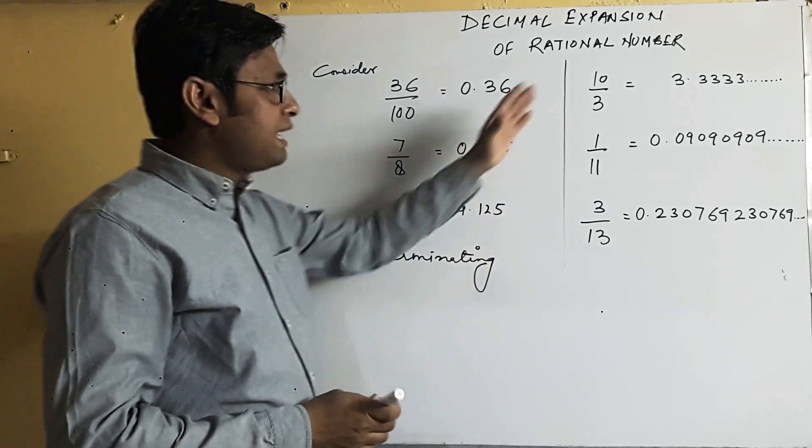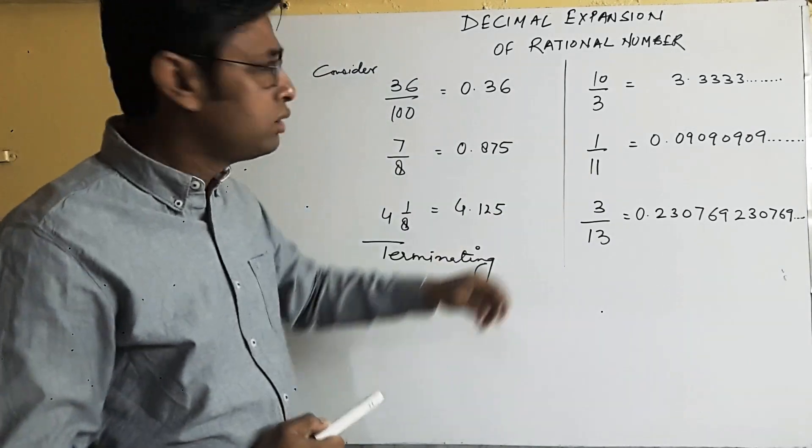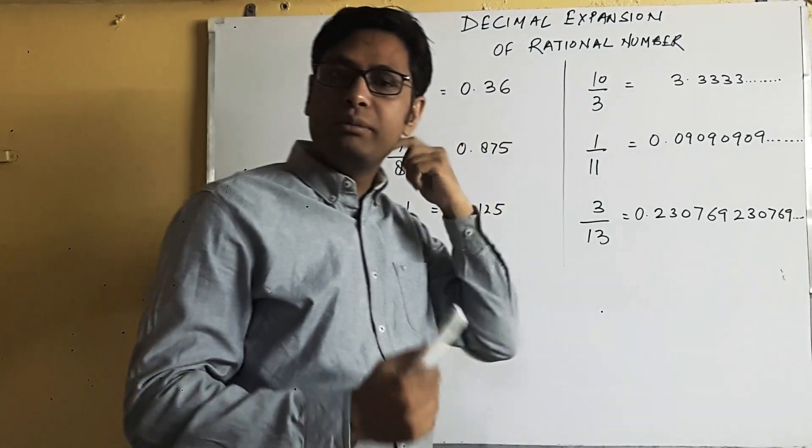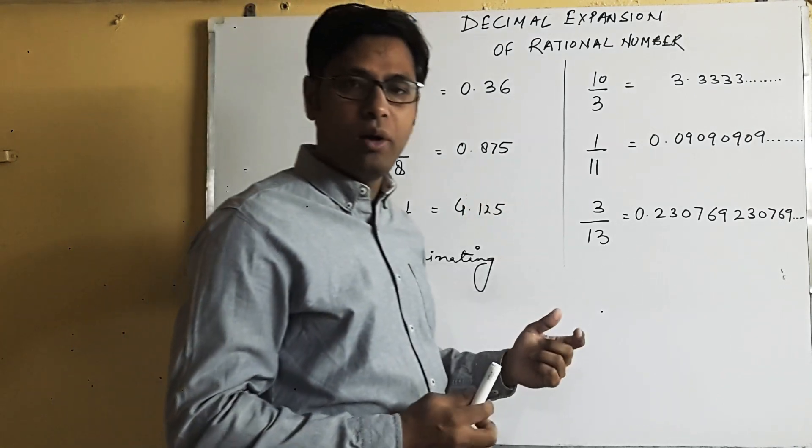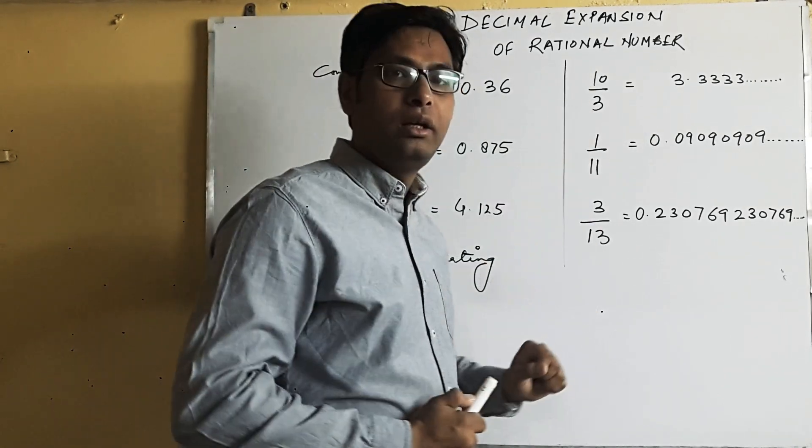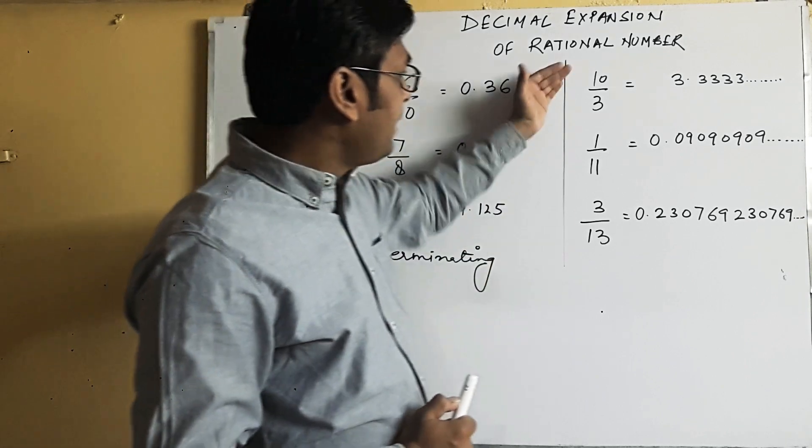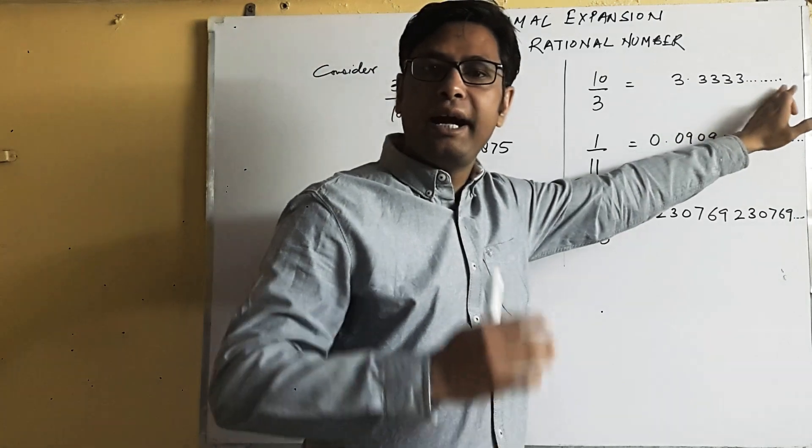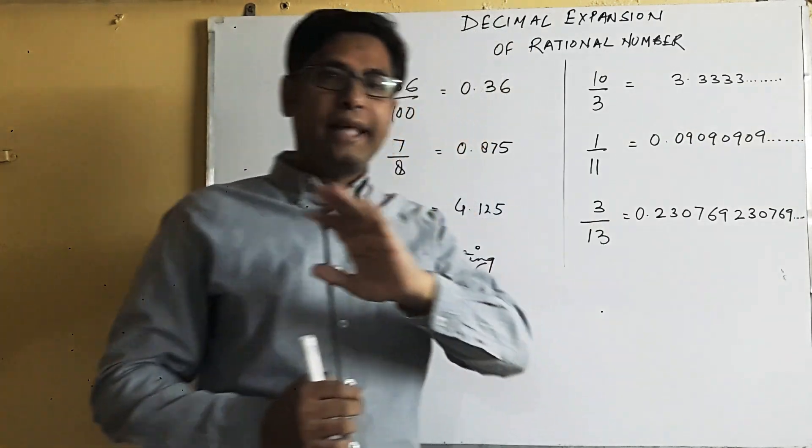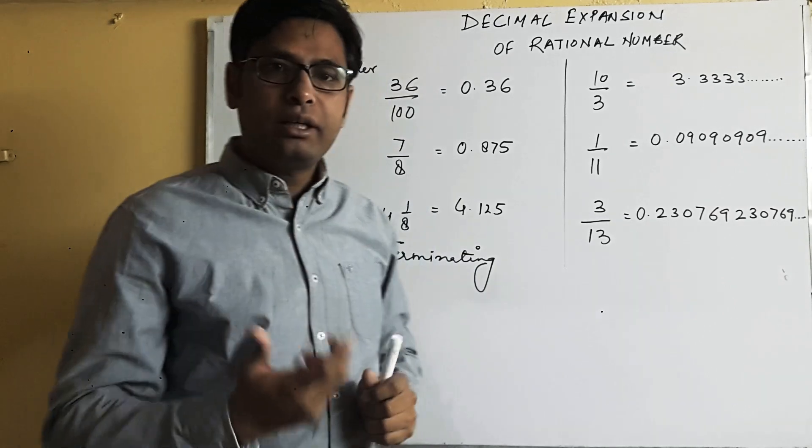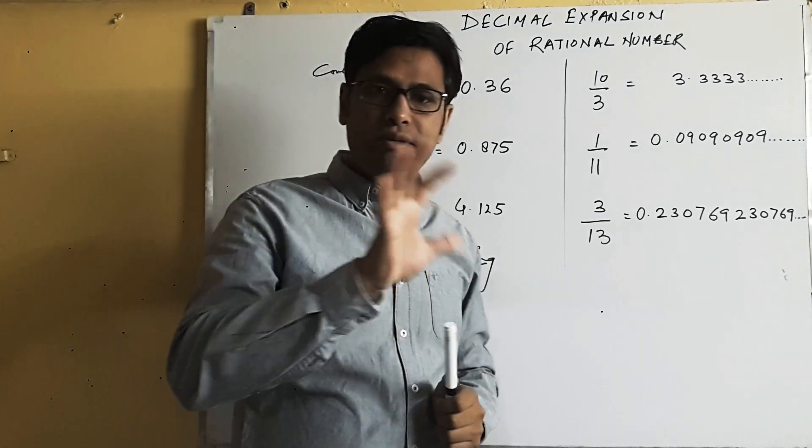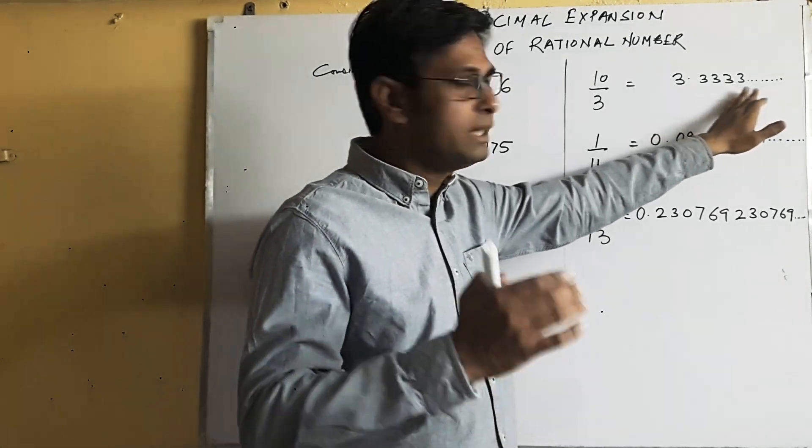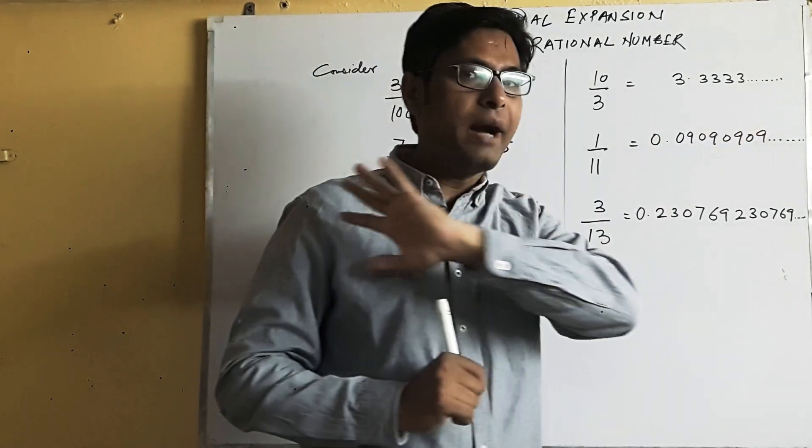After that, let's take some other rational numbers also, like 10 upon 3. If you divide and convert into decimal form, you will divide 10 by 3, and you will get 3.3333333 and so on. It will never come to an end. You can do it by yourself. You will see that it's 3.333333 and so on, it will never come to an end.